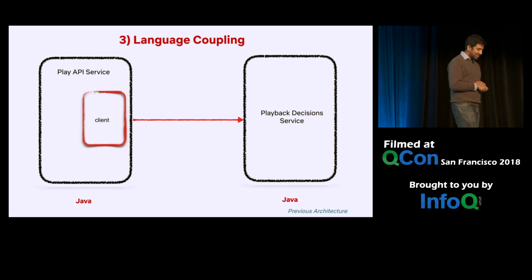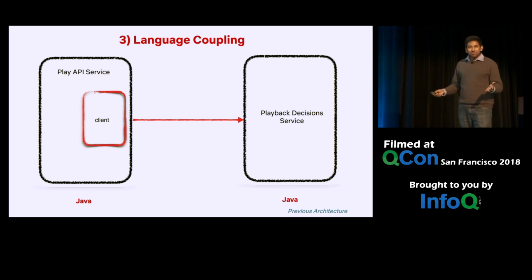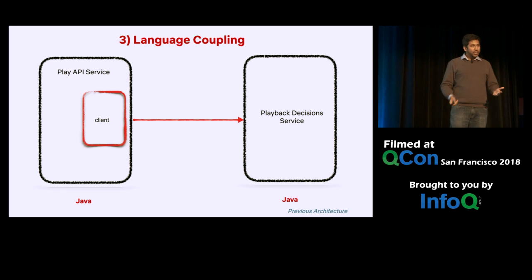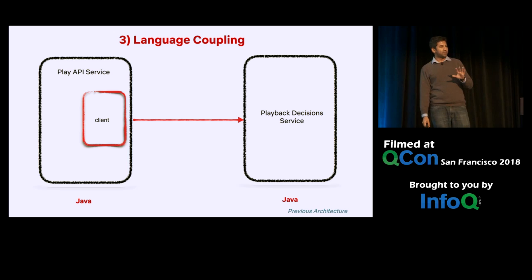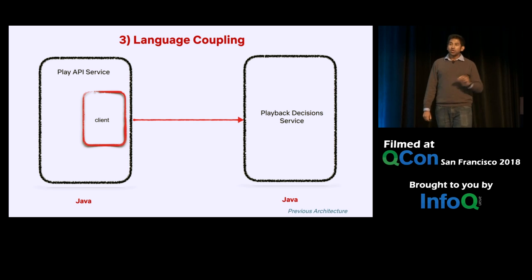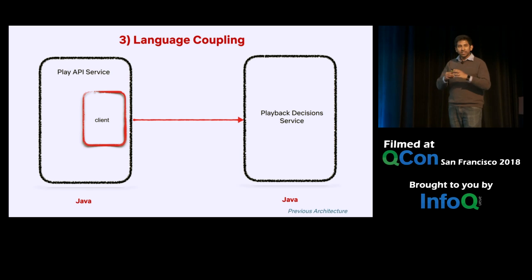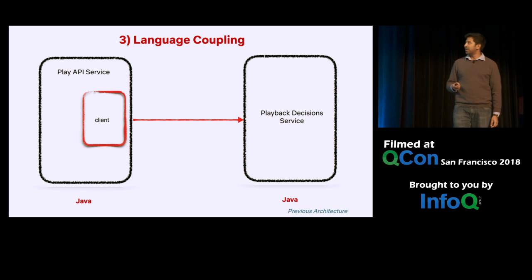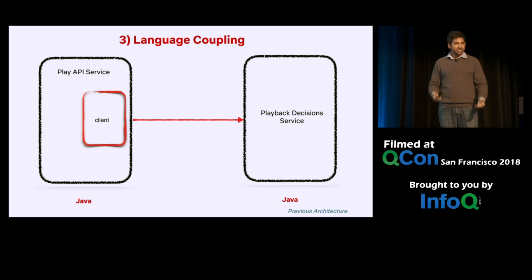Another interesting issue with the proliferation of shared libraries is language coupling — it encourages people to stay in Java. Netflix has historically been a Java shop. However, there are use cases we are exploring, like building backend-for-frontend services in Node, taking advantage of Node's functionality and the device team's expertise. In order to do that, any team owning a Node service would have to hand-write the list of clients to communicate with the rest of the ecosystem. It was such a high friction point that it discouraged most people from even considering such an option.